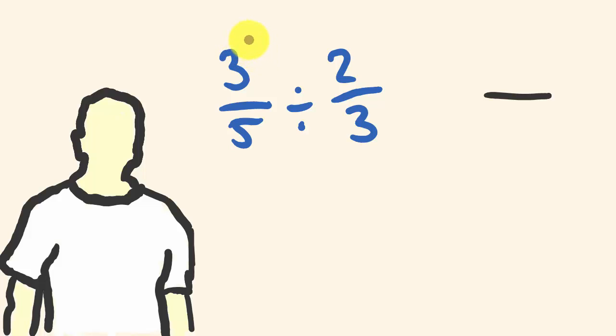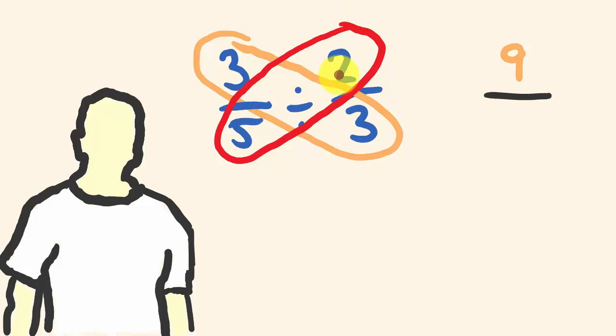The first thing I did is I just multiplied these two numbers together, this 3 and this 3, the top left number by the bottom right number here. So 3 times 3 is 9. Then what I did is with the remaining numbers I multiplied those to get the bottom number. 5 times 2 is 10. My answer? 9 tenths.